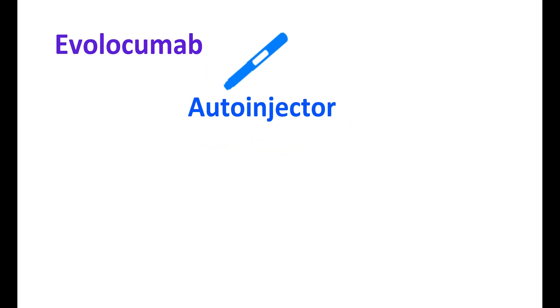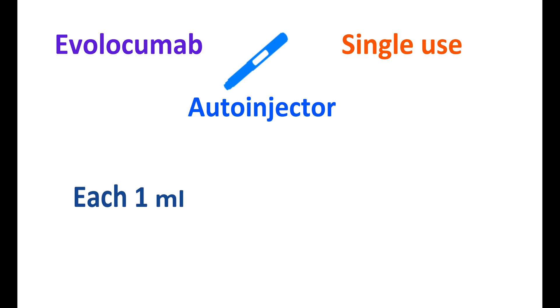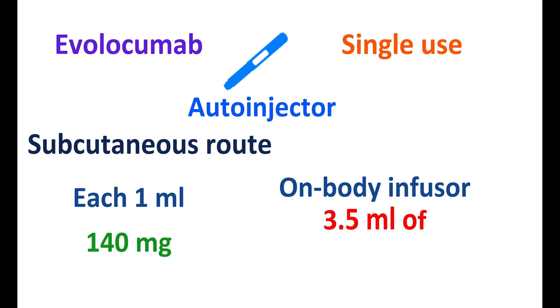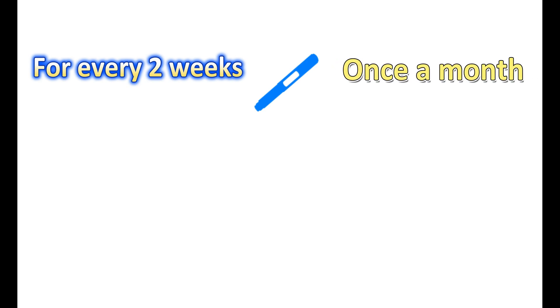Now let us see the doses of this medication. Evolocumab is available as an auto-injector, suitable for single use and available in two forms. In one formulation, each 1 ml of injection contains 140 mg of Evolocumab, given by subcutaneous route. It is also available as an on-body infuser where each 3.5 ml of solution contains 420 mg of Evolocumab. This medication can be given every two weeks or once a month based on patient convenience. When given every two weeks, 140 mg is administered using the single-use auto-injector.